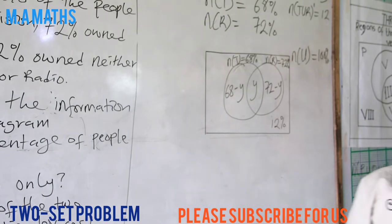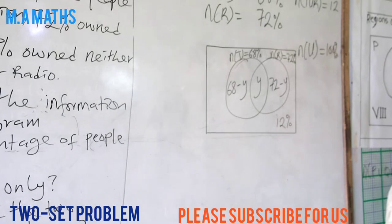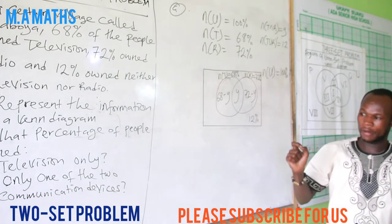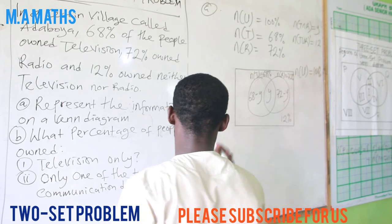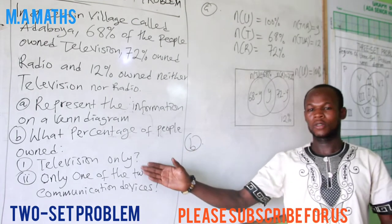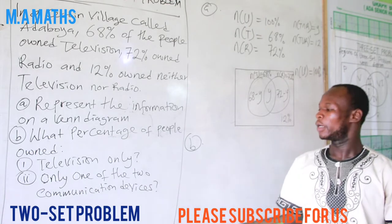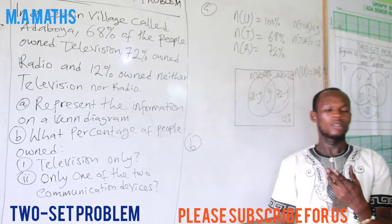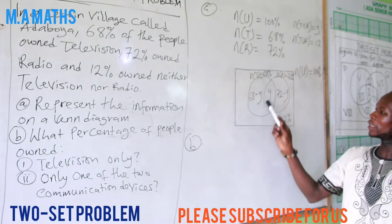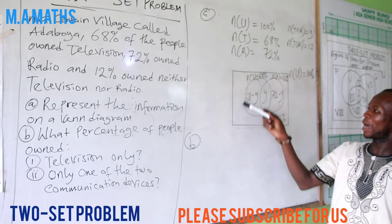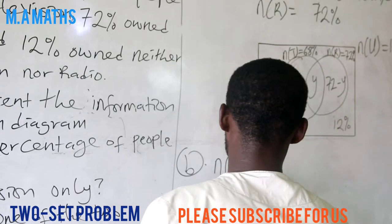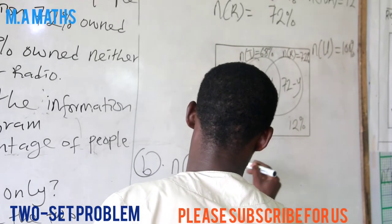So we have a question that we are being asked. We are done with part A. A says we should represent the data on the Venn diagram, so we are done. The next step is to find B. B says that what percentage of the people own television only? So we try to look for those that own television, and from our lesson one on the two-step problem, realize that only television represents this.